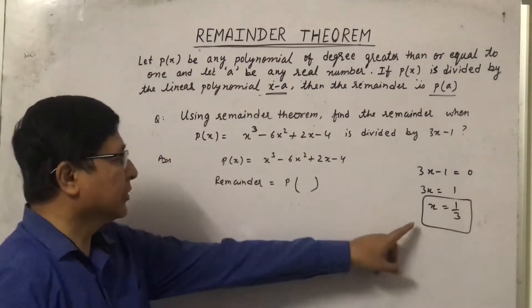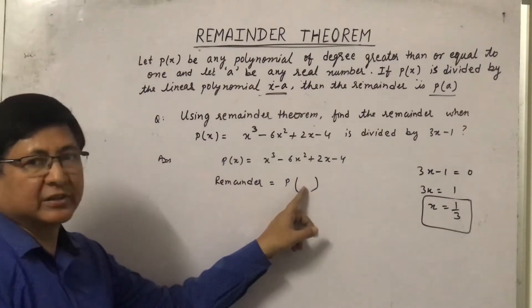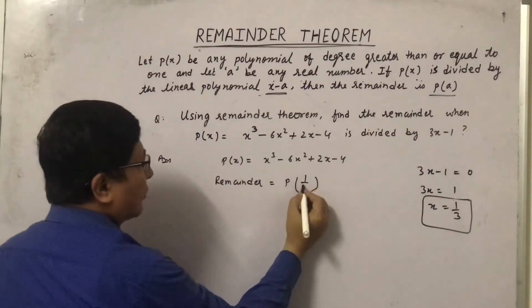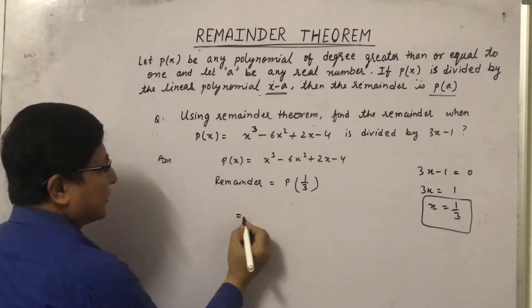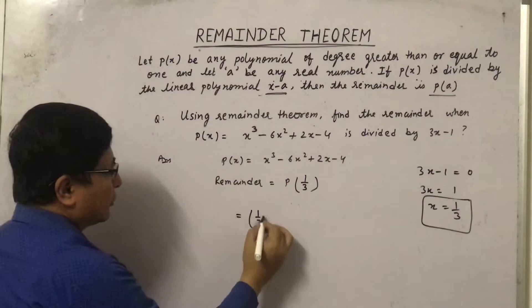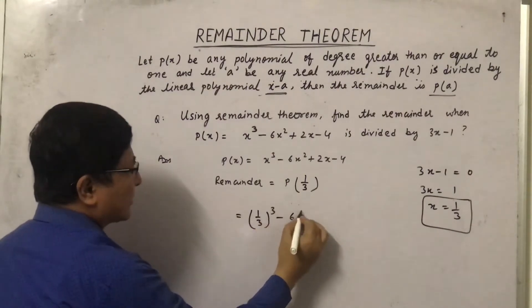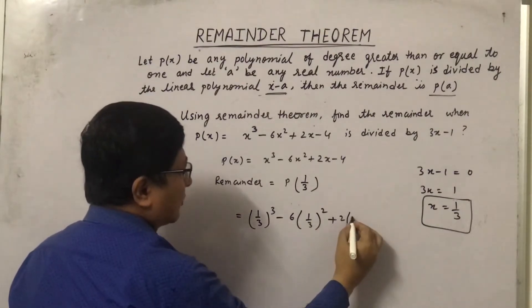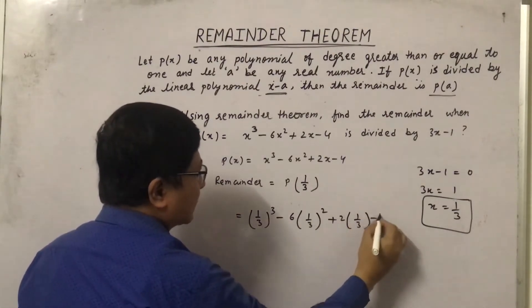If we put x equals 1/3, we will get the remainder. That means we have to find p(1/3) to find the remainder. Now let us solve this: (1/3)³ - 6(1/3)² + 2(1/3) - 4.